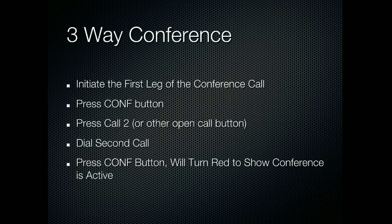A three-way conference is built into every phone. It's important to realize that a three-way conference is really two calls that are bridged together, and when you think about it as two different calls, it makes a lot more sense. What you'll do is make the first call to the first party. You'll press the conference button and then press Call To or another open call button. You'll then dial the second call, and once they're ready to join, press conference — the button will turn red to show that the conference is active.